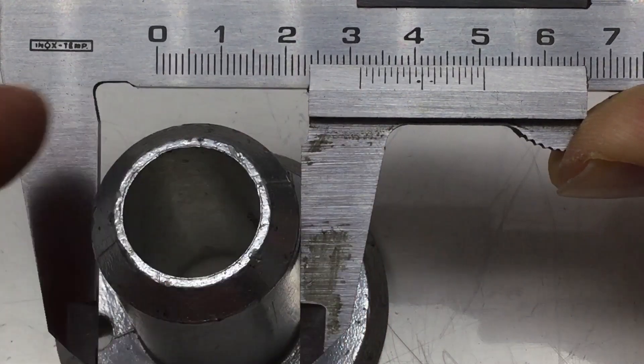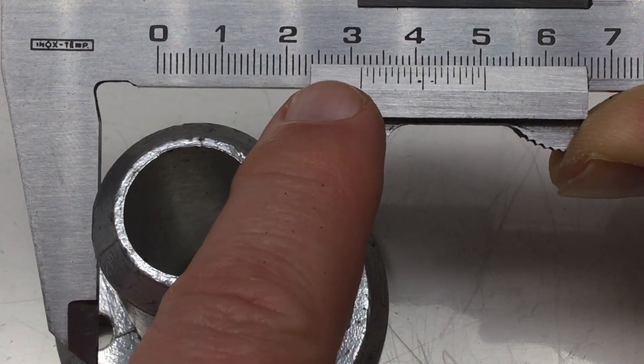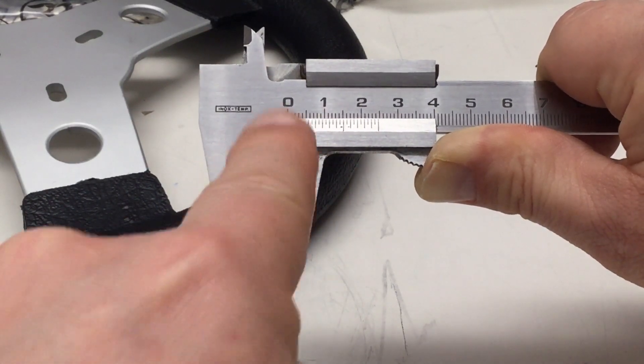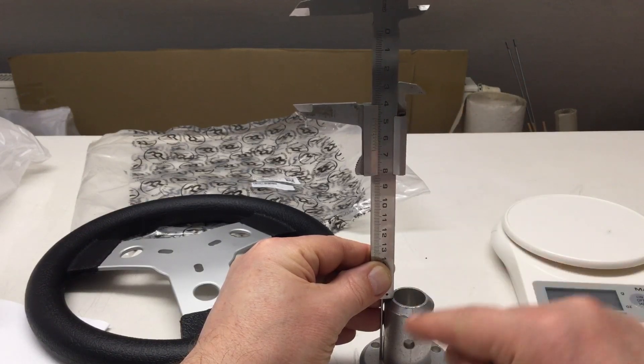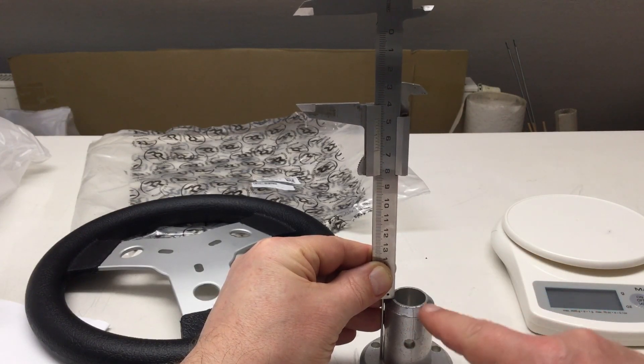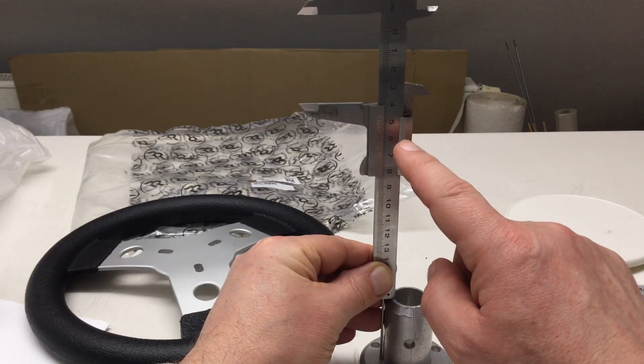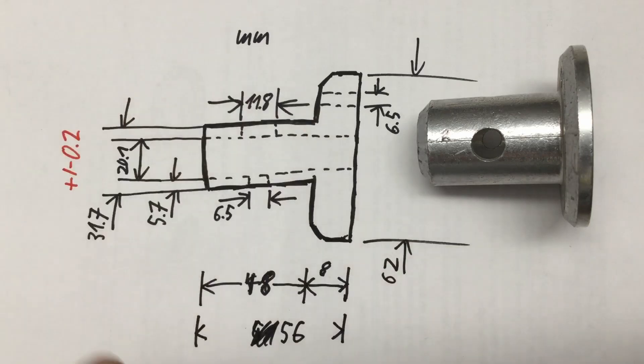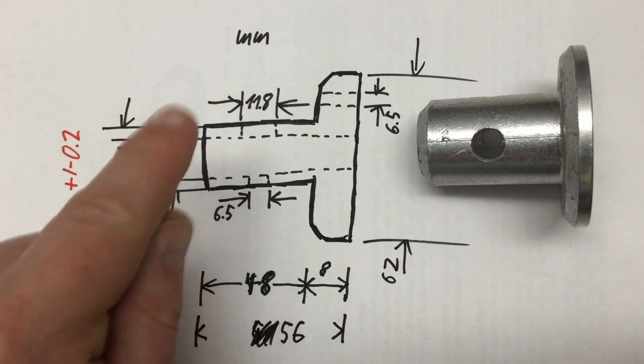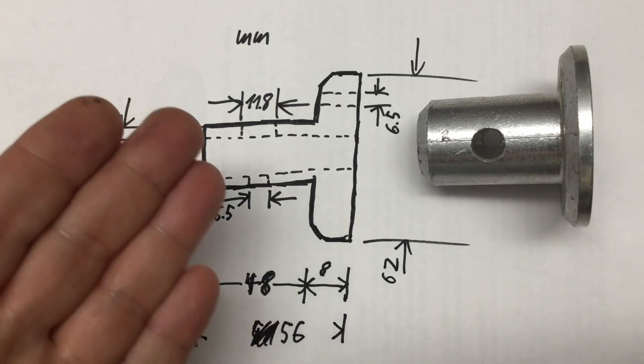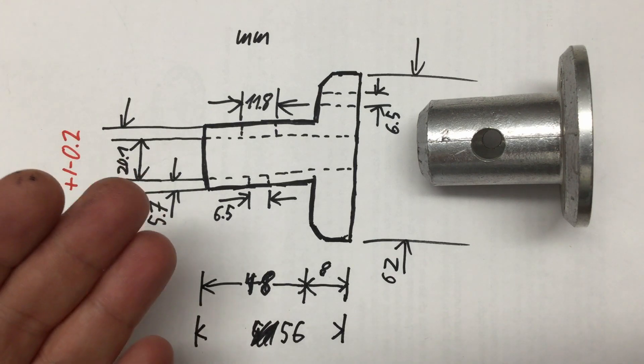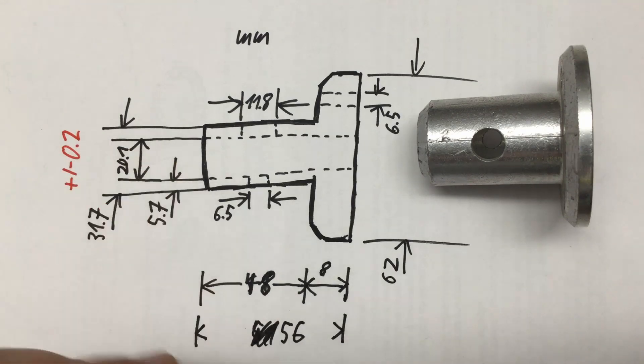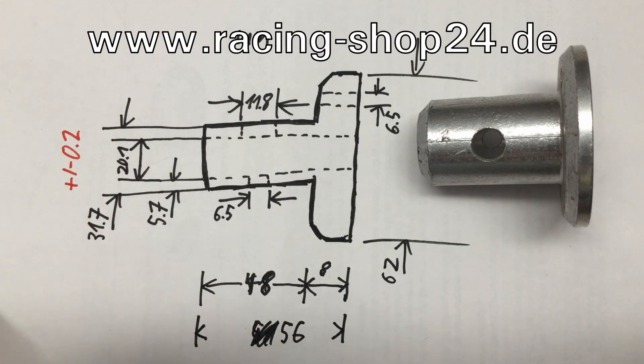That thing weighs in at 105 grams or 3.7 ounces. The inner diameter is indeed 20 millimeters, maybe 20.1. The holes here for mounting the wheel come in at 6.5 millimeters, so that's good for M6 bolts. Here's a drawing with the measurements again. That was the thing I bought from either the Top 2000 GMBH or the Racing Shop 24DE. Somewhere in the screen and link in the description.